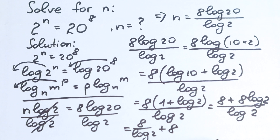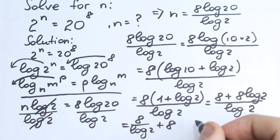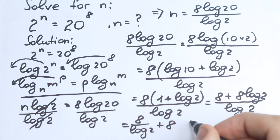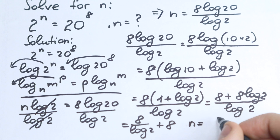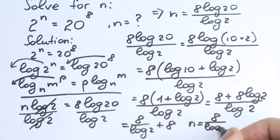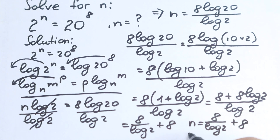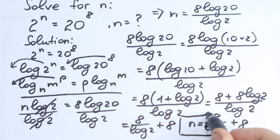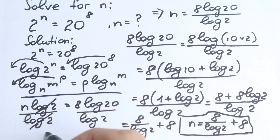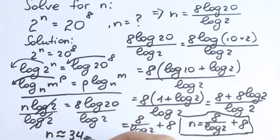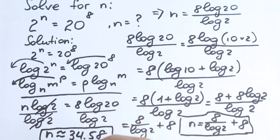We can divide this by parts: 8 over log 2 plus 8 log 2 over log 2. The log 2 terms cancel, giving plus 8. So our final answer is n equals 8 over log 2 plus 8. And approximately, n is approximately equal to 34.58.